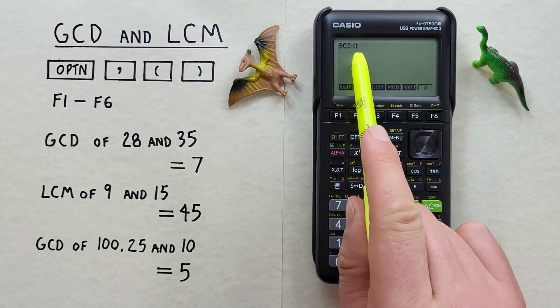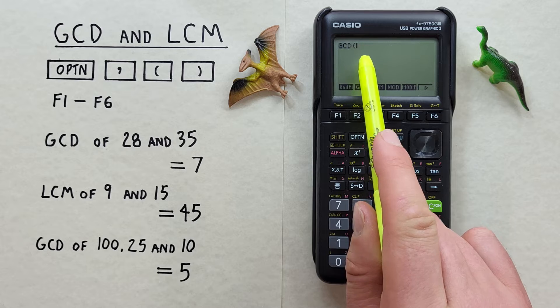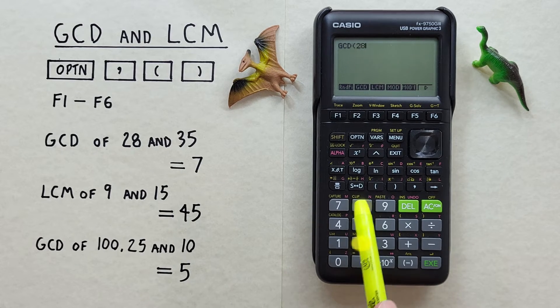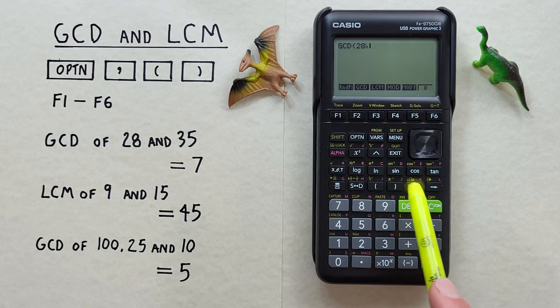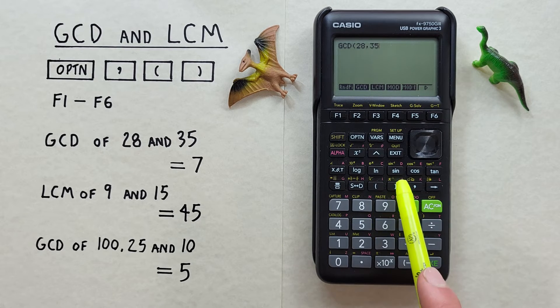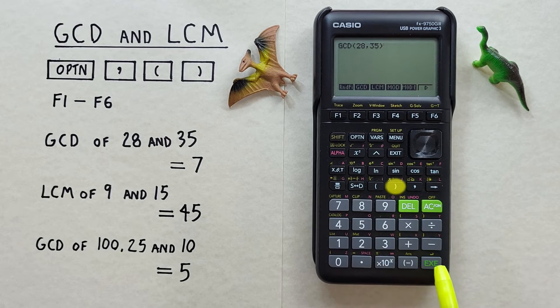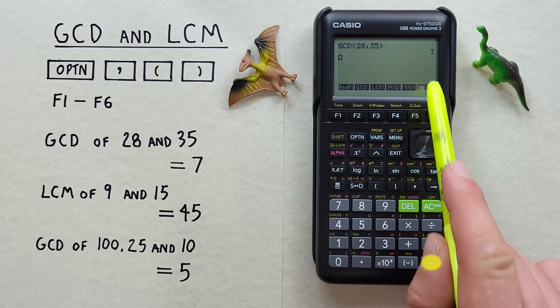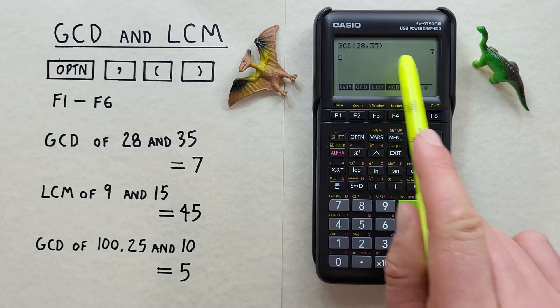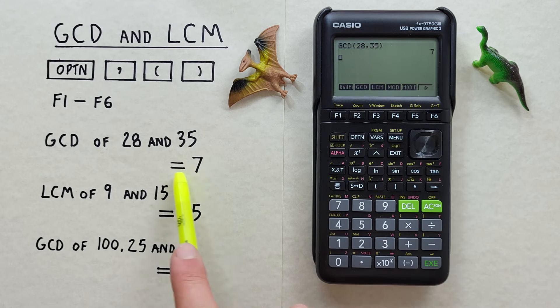Now we see GCD with an open bracket on our screen. We enter our first number, which was 28, and then we need to hit a comma to separate our two numbers. Our next number is 35, and then we can close our brackets and hit EXE. And there we go. The GCD of 28 and 35 is 7, which is correct.